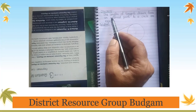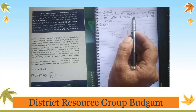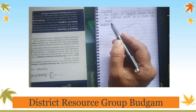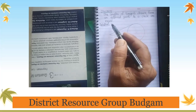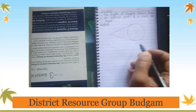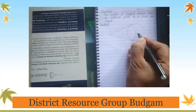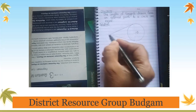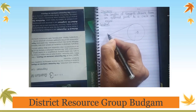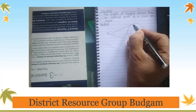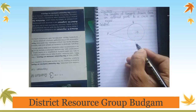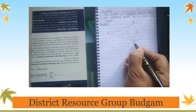The theorem states: the lengths of tangents drawn from an external point to a circle are equal. We have a circle, let O be the center of the circle, and two tangents are drawn from an external point — let the external point be P. So PQ is one tangent and PR is another tangent.